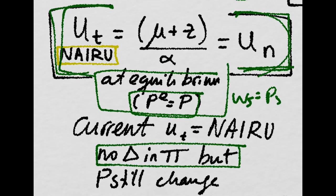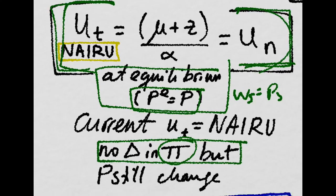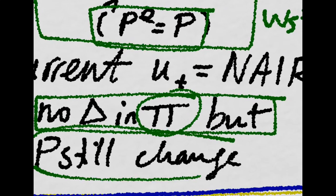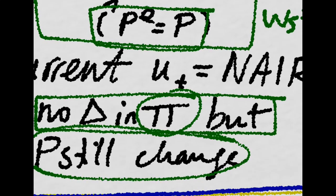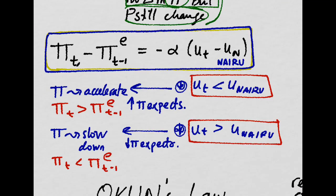But remember, inflation is just the change in prices. So, prices will still change. The NAIRU is just the unemployment rate at which these increasing prices would not accelerate.